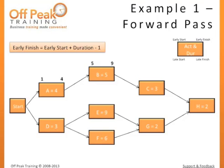Since Task C depends on B, it cannot start until after B's early finish, or the beginning of the tenth day. Using our formula, 10 plus 3 minus 1, the early finish is 12. The next node on this path is Task H. Since H has two predecessors, we will wait to calculate its early start until both paths have been completed.